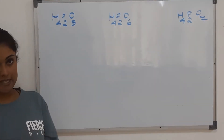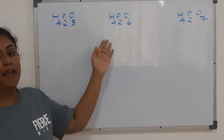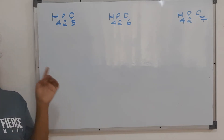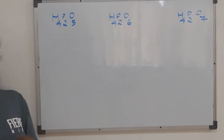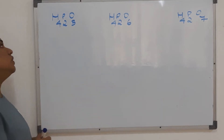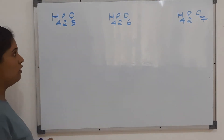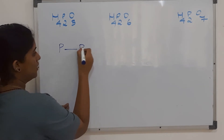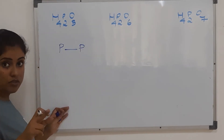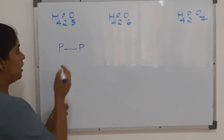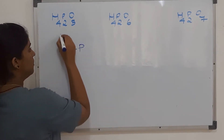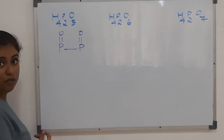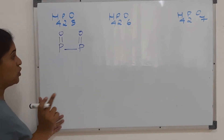Now let's look at the second class of oxoacids: H₄P₂O₅, H₄P₂O₆, and H₄P₂O₇. Unlike the previous class which had only one phosphorus at the center, this class has two phosphorus atoms for each structure. For H₄P₂O₅, there are two phosphorus atoms linked to each other, and each phosphorus must have a P=O unit attached, with a maximum of five bonds around each phosphorus.